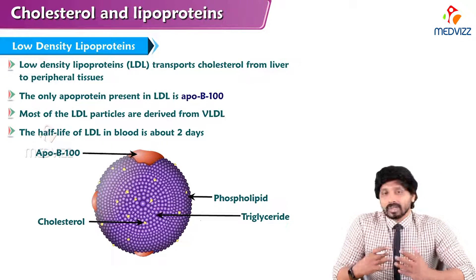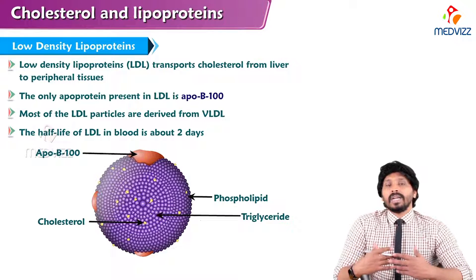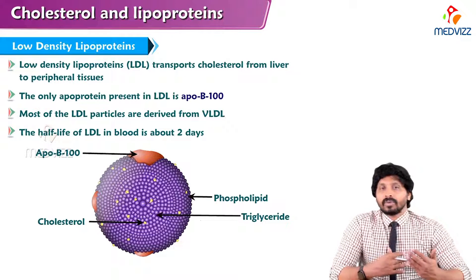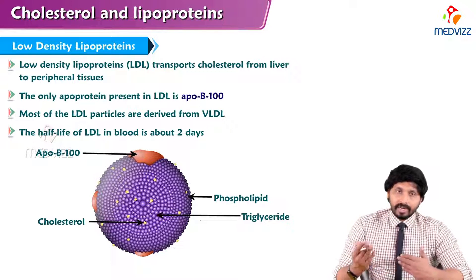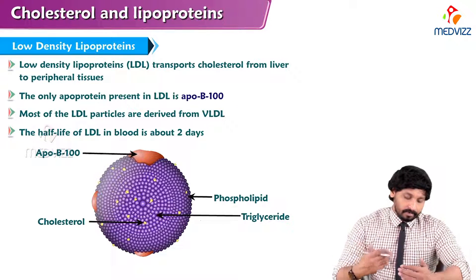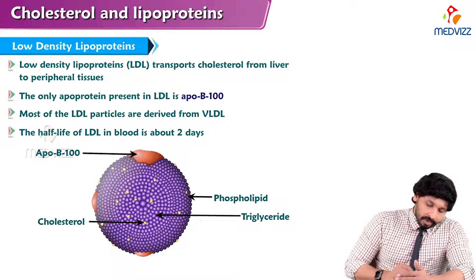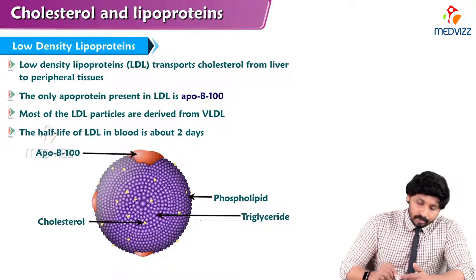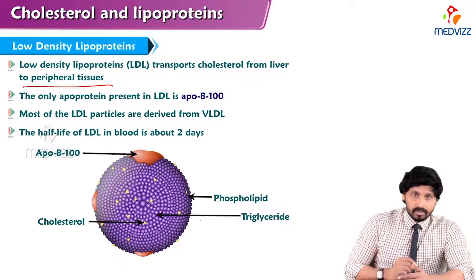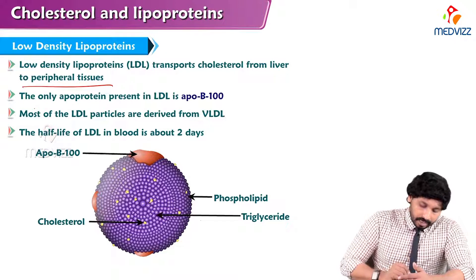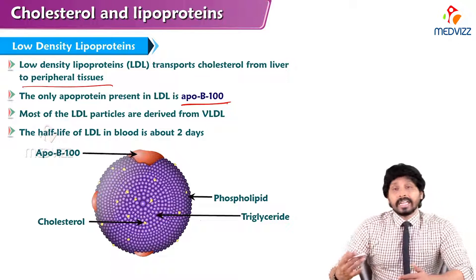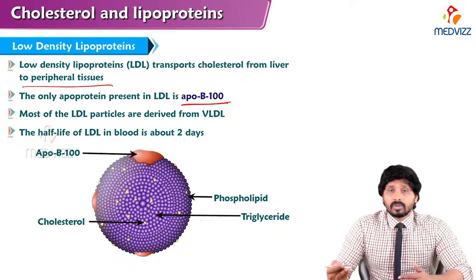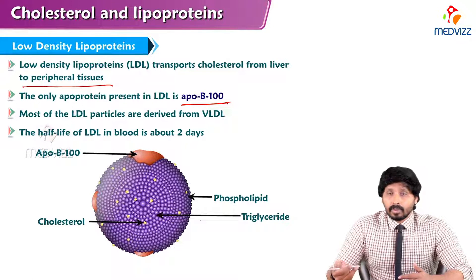We have already seen the structural aspects of LDL in the introductory video for classification of lipoproteins and their characteristics, so I am not going into detail — just a brief introduction. Low density lipoproteins transport cholesterol from liver to peripheral tissues. The only apoprotein present in LDL is ApoB100, because this LDL is produced in the liver.